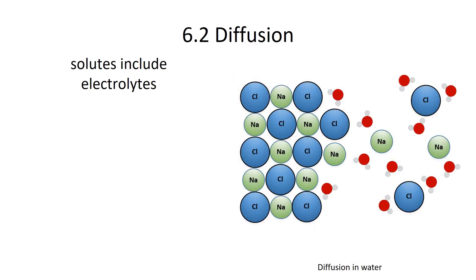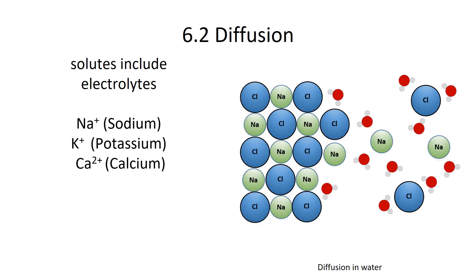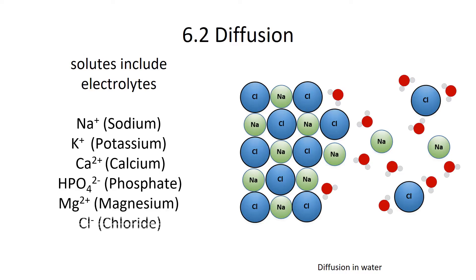Other common solutes include the electrolytes — things like sodium, potassium, calcium, phosphate, magnesium, and chloride. Importantly, these electrolytes do not easily cross cellular membranes. The example shown on the right is sodium chloride, which is basically table salt, and you can see it diffusing in water.